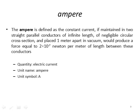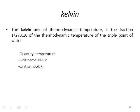The ampere is defined as the constant current which, if maintained in two straight parallel conductors of infinite length and negligible circular cross-section, placed one meter apart in vacuum, would produce a force equal to 20 micronewton per meter of length between those conductors. The kelvin, the unit of thermodynamic temperature, is the fraction 1 over 273.16 of the thermodynamic temperature of the triple point of water. The quantity is temperature, the unit is kelvin, and the symbol is K.